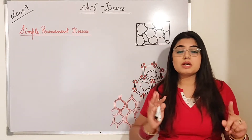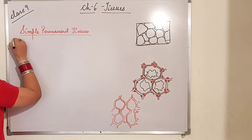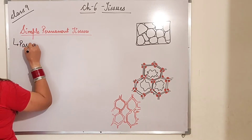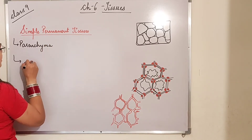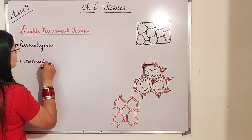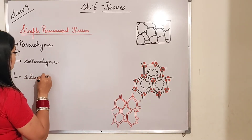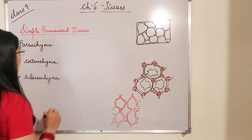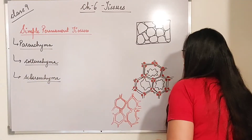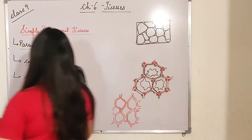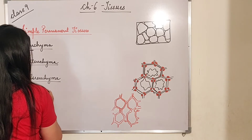Simple permanent tissues are basically of four types. The first type is parenchyma — the first diagram I have drawn is also a parenchyma. Second is colenchyma. Third is sclerenchyma. So parenchyma, colenchyma, and sclerenchyma are the three main types of simple permanent tissue. And the last one is the protective tissue.